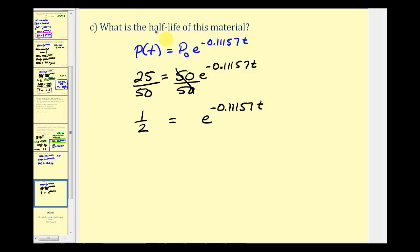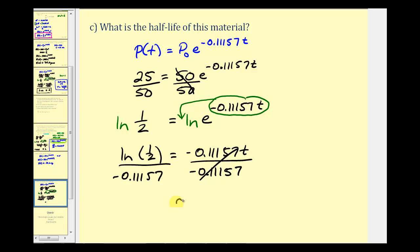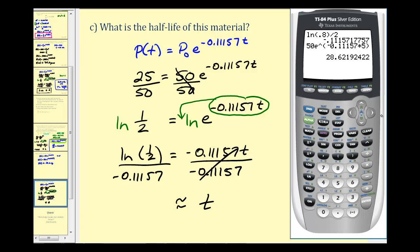We want to solve for t, so we take the natural log of both sides and apply the power property of logarithms, moving the exponent to the front as the coefficient of natural log e. So we have natural log of one half equals negative 0.11157 times t times natural log e. Since natural log e equals one, we divide by our decimal k value. Natural log(0.5) divided by negative 0.11157 gives us a half-life of approximately 6.2 years.